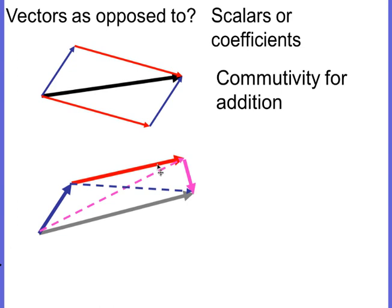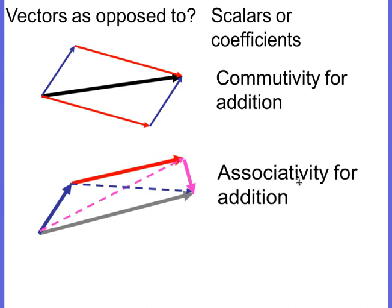What about this picture? What is being illustrated here? Here we are adding three vectors together, and these dotted vectors in here — this is illustrating associativity. If you add the blue and red vectors together first to get this magenta dotted, and then add on the third vector, you get exactly the same result as if you add the red and magenta together, getting this blue dotted vector, and then add on the blue.